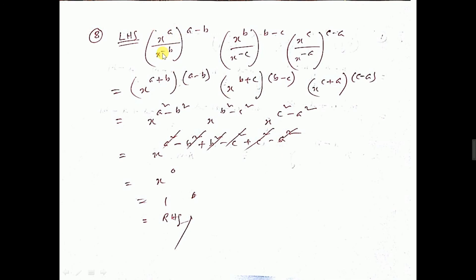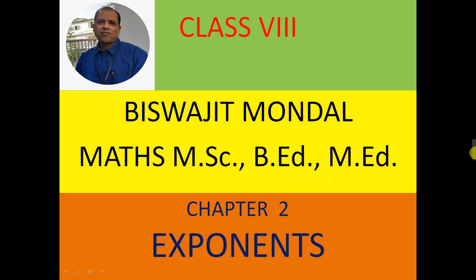Next: x to the power a divided by x to the power minus b — the minus b goes up and becomes plus, giving x to the power a plus b, into a minus b. Then x to the power b plus c into b minus c, and x to the power c plus a into c minus a. Using the formula (a+b)(a−b) = a² − b²: we get a² minus b², plus b² minus c², plus c² minus a². Same base x, so powers add: a² − b² + b² − c² + c² − a² = 0. Therefore x to the power 0 equals 1. That is all for this video.